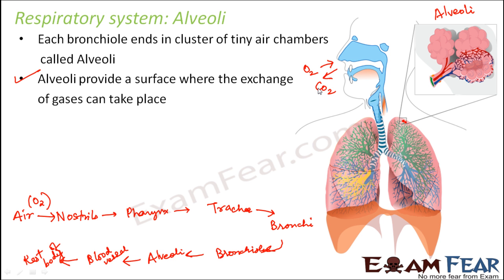Overall, we take in oxygen and give out carbon dioxide — this is how the exchange of gases takes place inside our respiratory system. Alveoli are the main places where actual exchange of gases occurs. From the nostrils to the alveoli, everything is part of the respiratory system, but only at the alveoli does the real exchange between the respiratory system and the blood vessels take place.